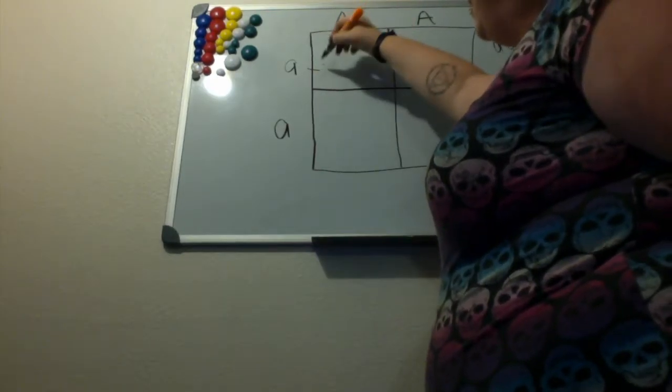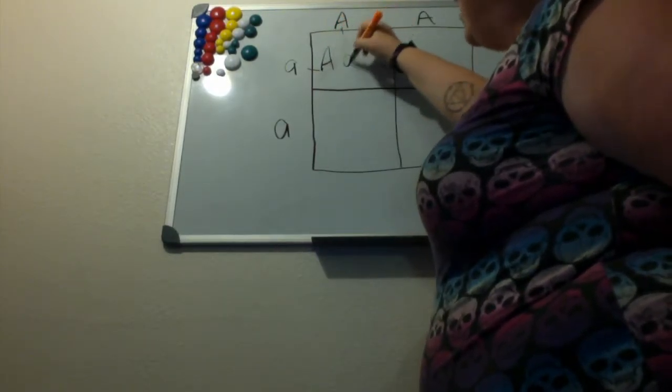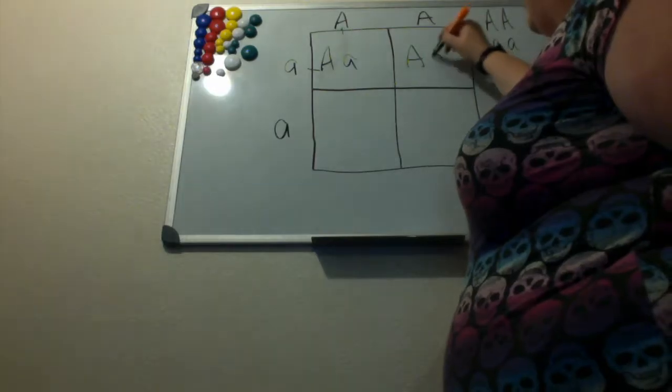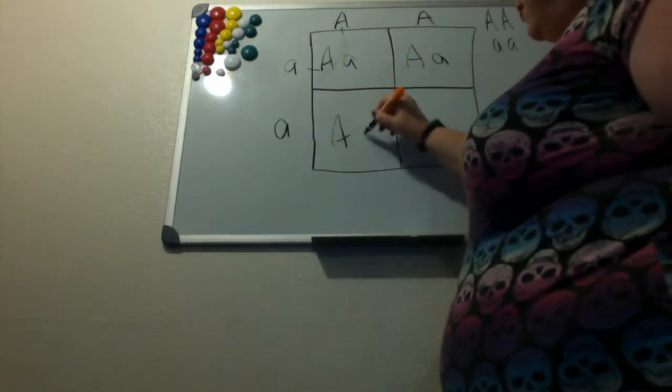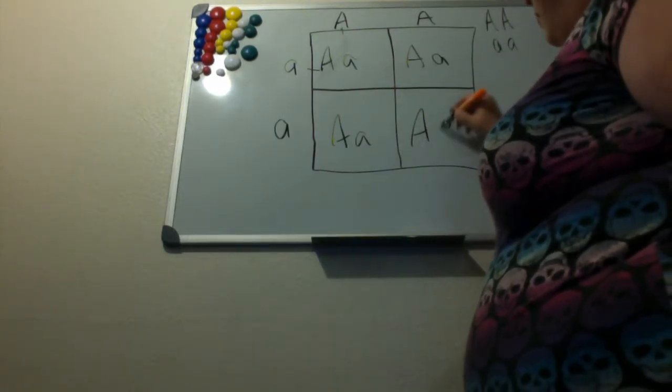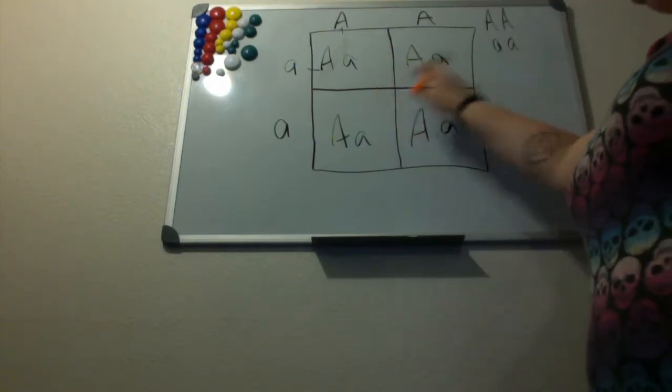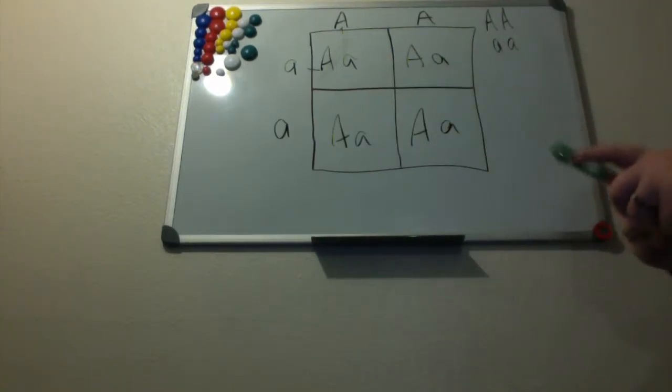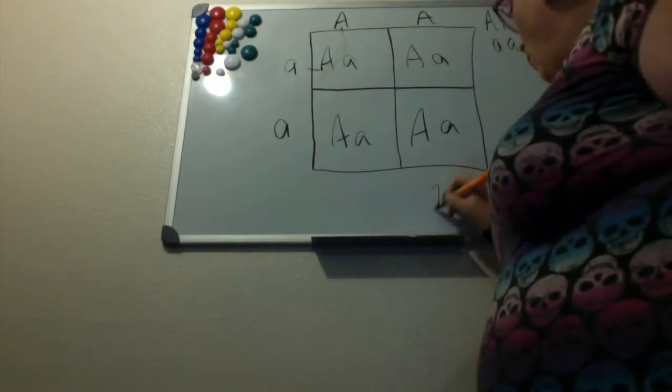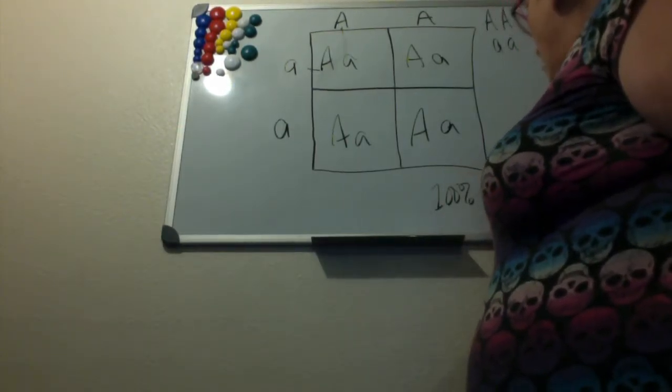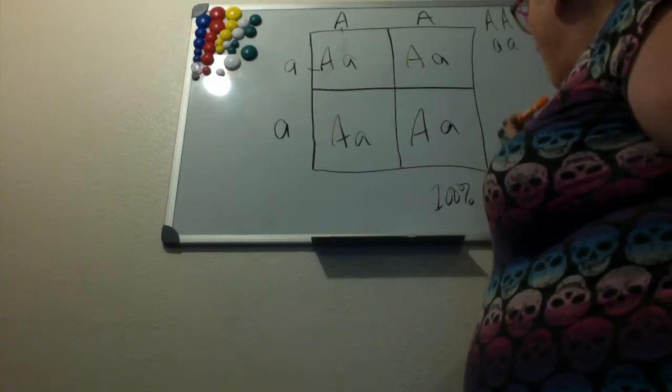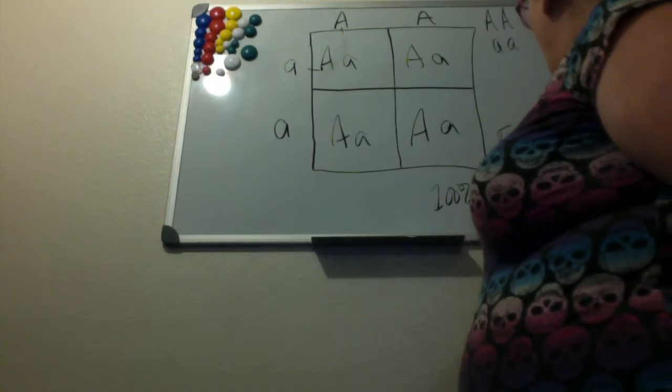We'll end up having them all like this, so we have one dominant and one recessive allele in each of our possibilities. In this case, that means there is a 100% chance that our offspring, our F1 generation, will be like this.